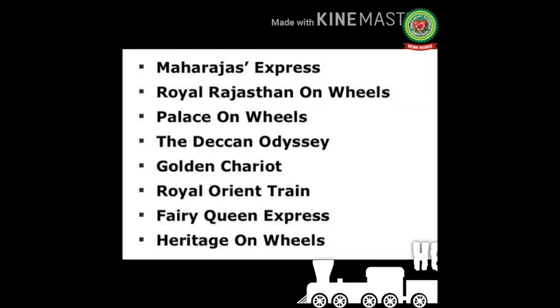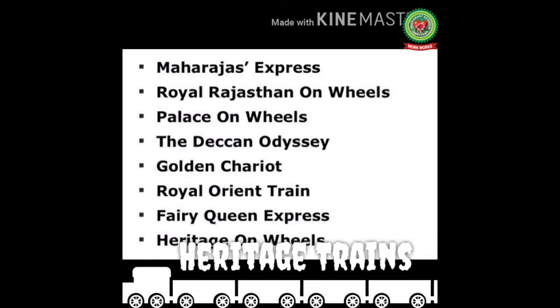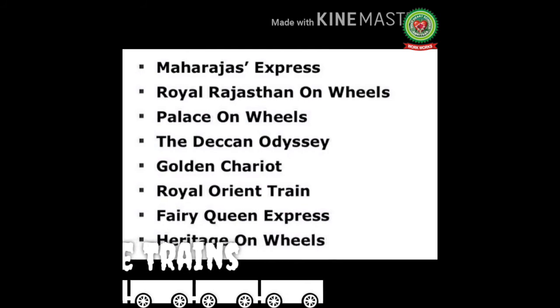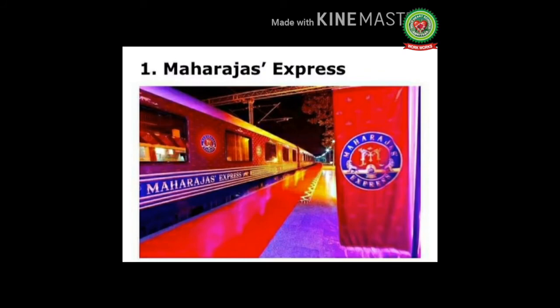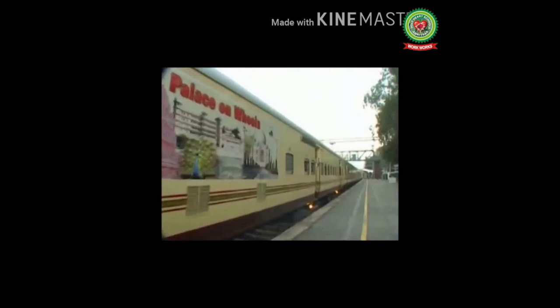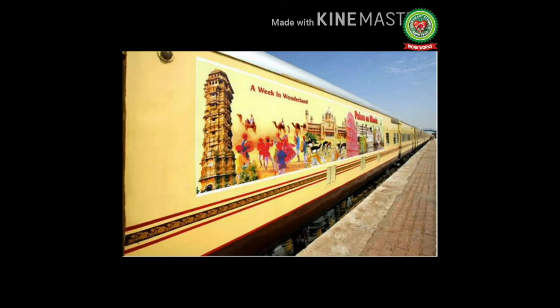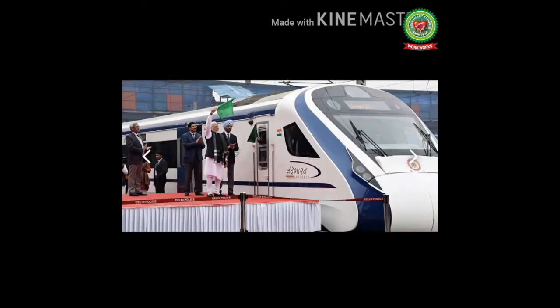I will now tell you some names of heritage trains of India: Maharaja Express, Royal Rajasthan on Wheels, Palace on Wheels, The Deccan Odyssey, Golden Chariot, Royal Orient Train, Fairy Queen Express, and Heritage on Wheels. The Maharaja Express is one of the five most luxurious trains in the world. The Palace on Wheels is literally a moving palace, bringing together the past and present of Rajasthan and its various cities. Vande Bharat is India's fastest train, running at a speed of 160 km per hour, inaugurated by Prime Minister Modi on 15th February 2019.